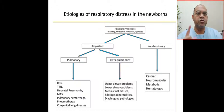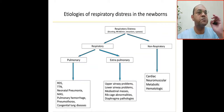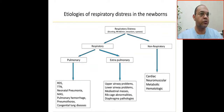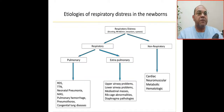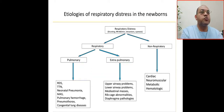Bismillah ar-Rahman ar-Rahim. These questions come from Dr. Inas. What are the causes or etiologies of respiratory distress in the newborn? A baby with respiratory distress presents with tachypnea, grunting, and a respiratory rate of more than 60. What is the cause of this respiratory distress in this newborn?